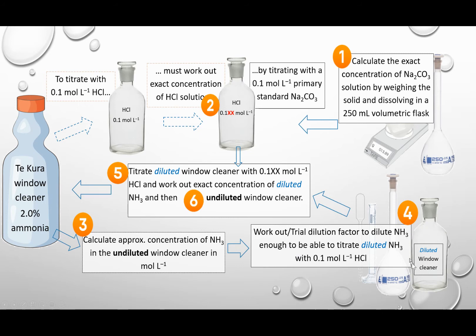Based on that trial, the window cleaner is diluted. You do not have to do this dilution — it will be done for you. You just simply have to work out that it has to be diluted. And then you do the titration. This is the actual titration you will be doing: the diluted solution with our known exact concentration of hydrochloric acid. And then once we can work out the exact concentration of the diluted window cleaner, by using the factor that we diluted it by, we multiply that factor and we can therefore work out the exact concentration of ammonia in the window cleaner and whether that statement is true, that it contains 2.0% ammonia.